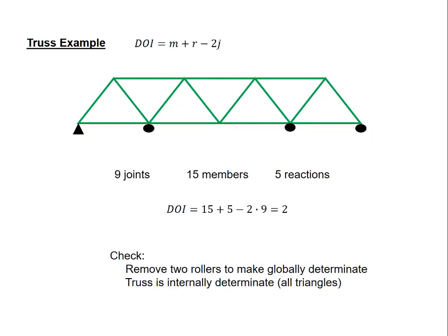Let's now remove the annotations from the figure and check our results. For this check, I'm going to start by removing two rollers to make the truss globally determinate. This is a simply supported structure, pin at one end, roller at the other, so there's no other restraint that I can remove without making it unstable. We also can tell that the truss is internally determinate because it's made up exclusively of triangles. That's a very good indicator that we have a nice, stable, determinate truss. So we've confirmed by physical reason that the equation is telling us something reasonable.